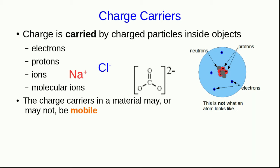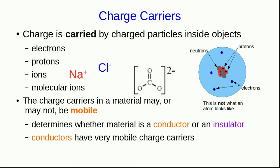The charge carriers in a material may or may not be fairly mobile. In other words, they may be able to move around or maybe they can't. And how mobile they are determines whether a material is a conductor or an insulator. If the charge carriers are quite mobile, then the material will be a conductor.